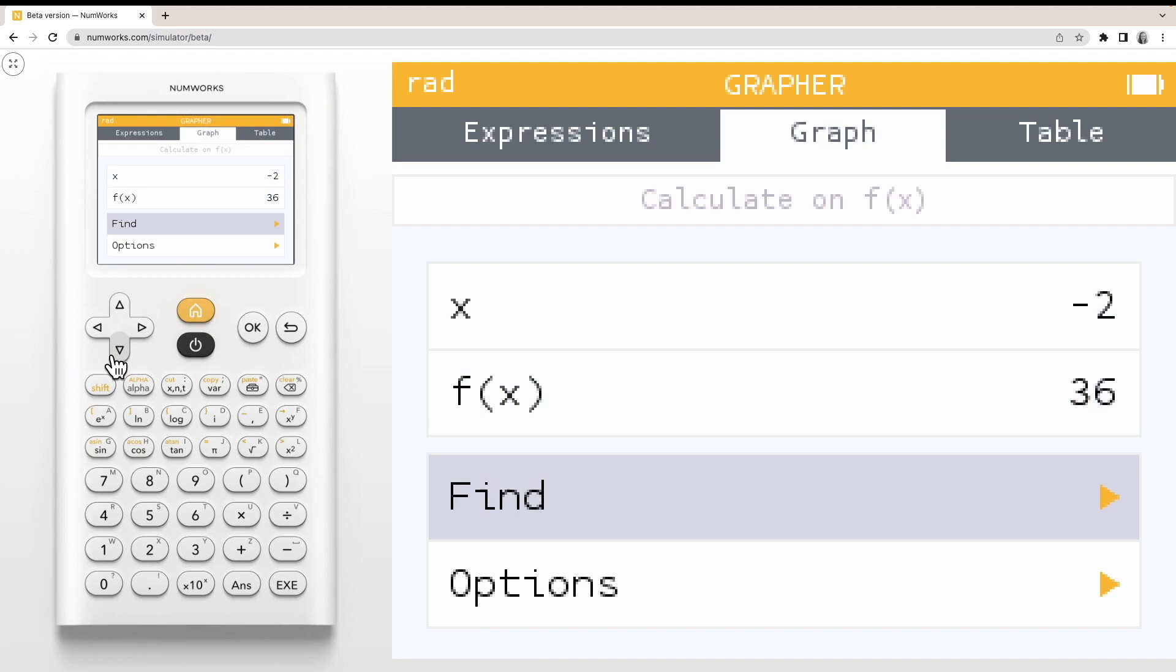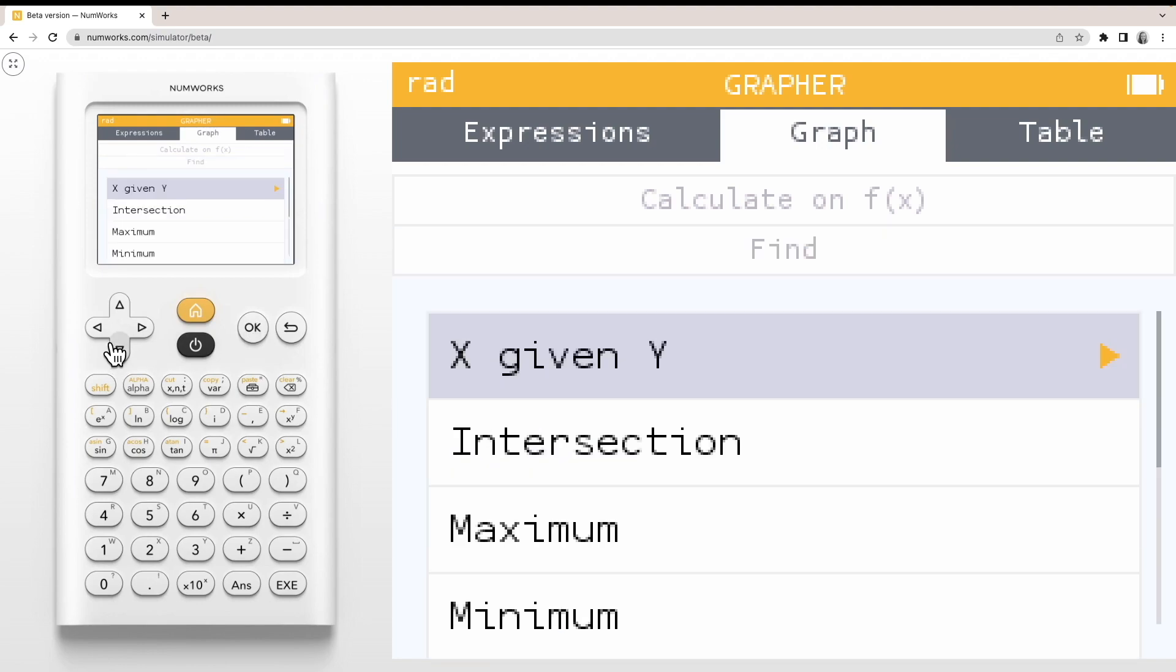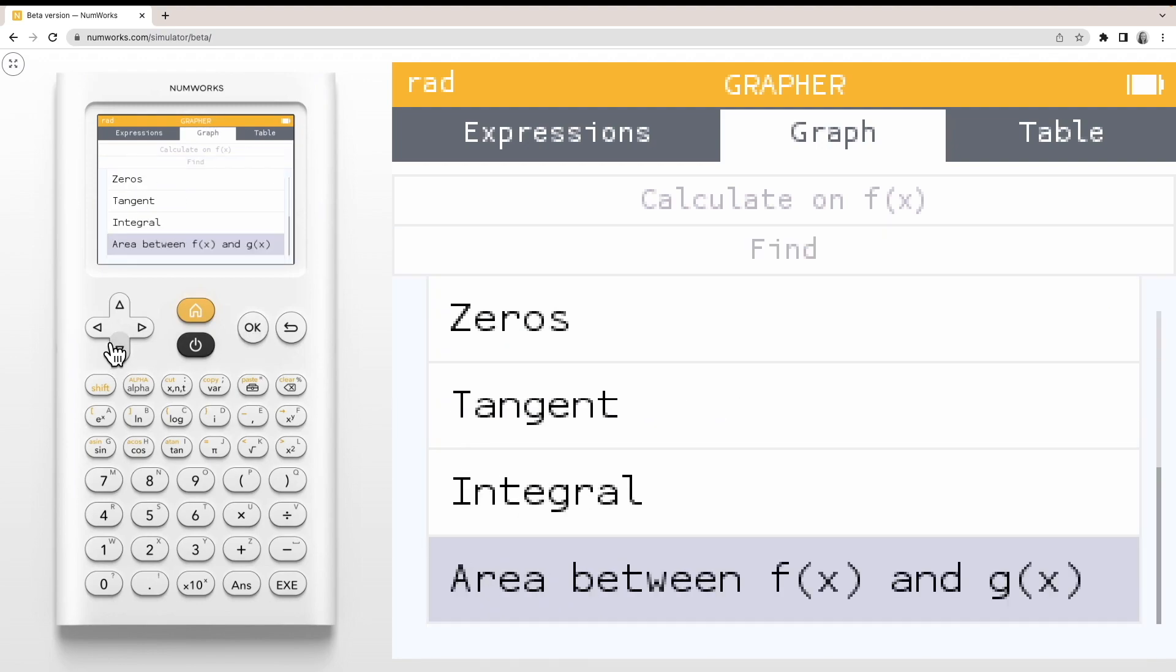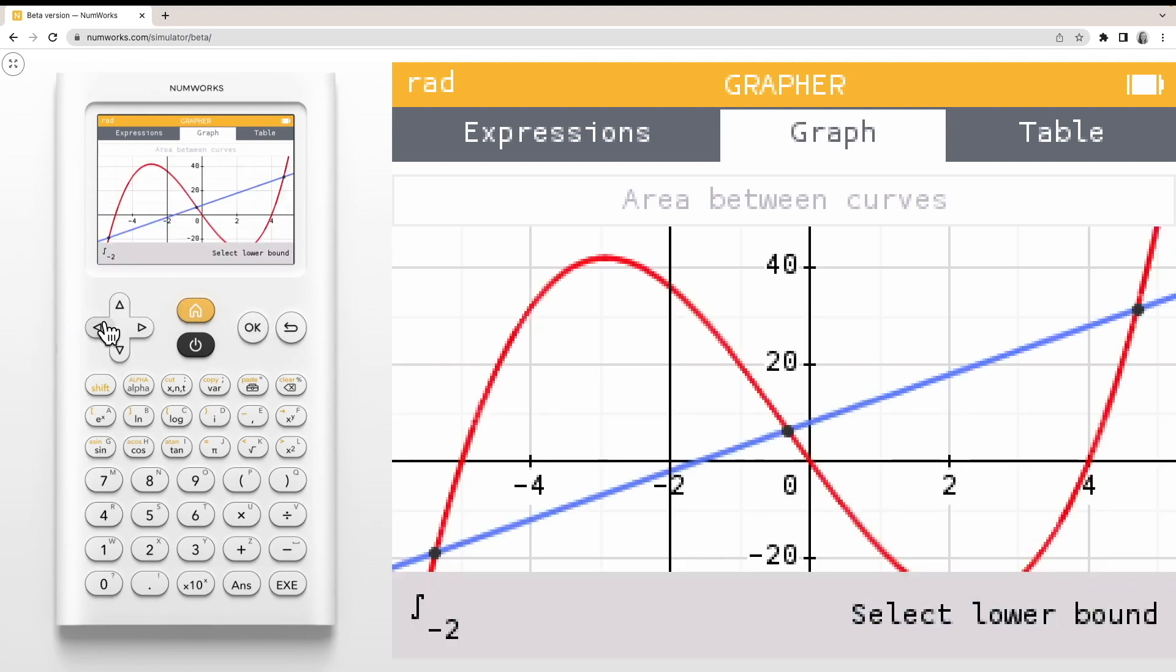Navigate down to find. In the find menu, select area between f and g. Use your left and right arrows to navigate to your lower bound. You can also enter your lower bound using your number pad and the execute key.